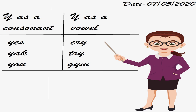Now, next line you will write 'Y as a consonant' on the left, and on the right hand side 'Y as a vowel'. Take a ruler and draw a line in between. Y as a consonant means Y should sound like Y. For example: Y-E-S, Yes — Y is sounding as Y. Y-A-K, Yak — again Y is sounding as Y. Y-O-U, You — again Y is sounding as Y.